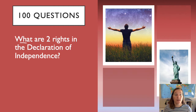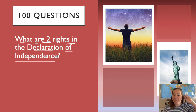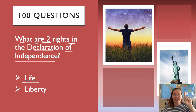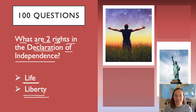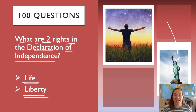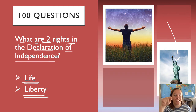What are two rights in the Declaration of Independence? Life and liberty. For example, what do you see in this picture? It's the Statue of Liberty. And where can you find the Statue of Liberty? In New York City.